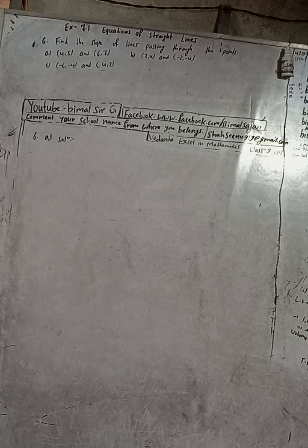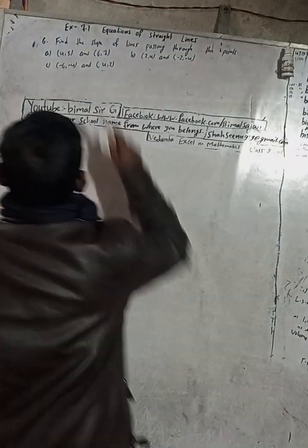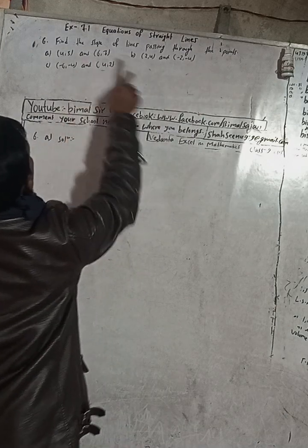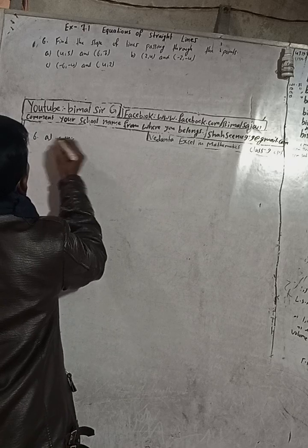Hi class 9 and 10 students, welcome back to Bimal Surgy YouTube channel. This is question number 6, Exercise 7.1, Equations of Straight Lines from Vedant Excel Optional Mathematics class 9. The question is: find the slope of the line passing through the points. There are three points, so let's write the solution.